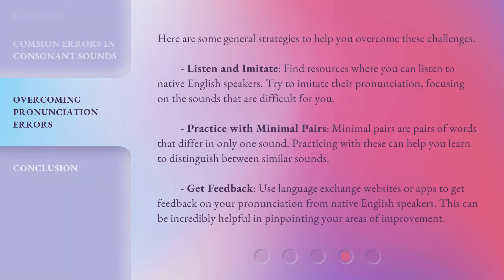Here are some general strategies to help you overcome these challenges. Listen and imitate: find resources where you can listen to native English speakers and try to imitate their pronunciation, focusing on the sounds that are difficult for you. Practice with minimal pairs: minimal pairs are pairs of words that differ in only one sound — practicing with these can help you learn to distinguish between similar sounds. Get feedback: use language exchange websites or apps to get feedback on your pronunciation from native English speakers. This can be incredibly helpful in pinpointing your areas of improvement.